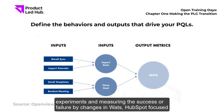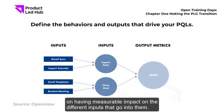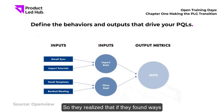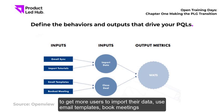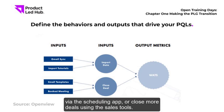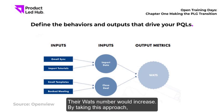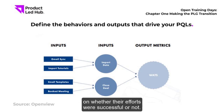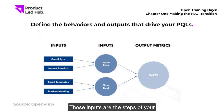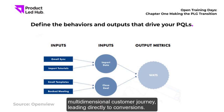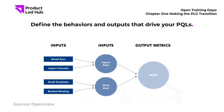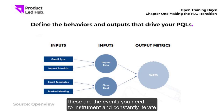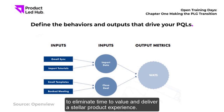For HubSpot's WATs, instead of measuring experiments by changes in WATs directly, HubSpot focused on having a measurable impact on the different inputs. They found that getting more users to import data, use email templates, book meetings via the scheduling app, or close deals using sales tools would increase their WAT number. By targeting inputs, they got instant feedback on whether efforts were successful — and those inputs are the steps of your multi-dimensional customer journey leading directly to conversions.